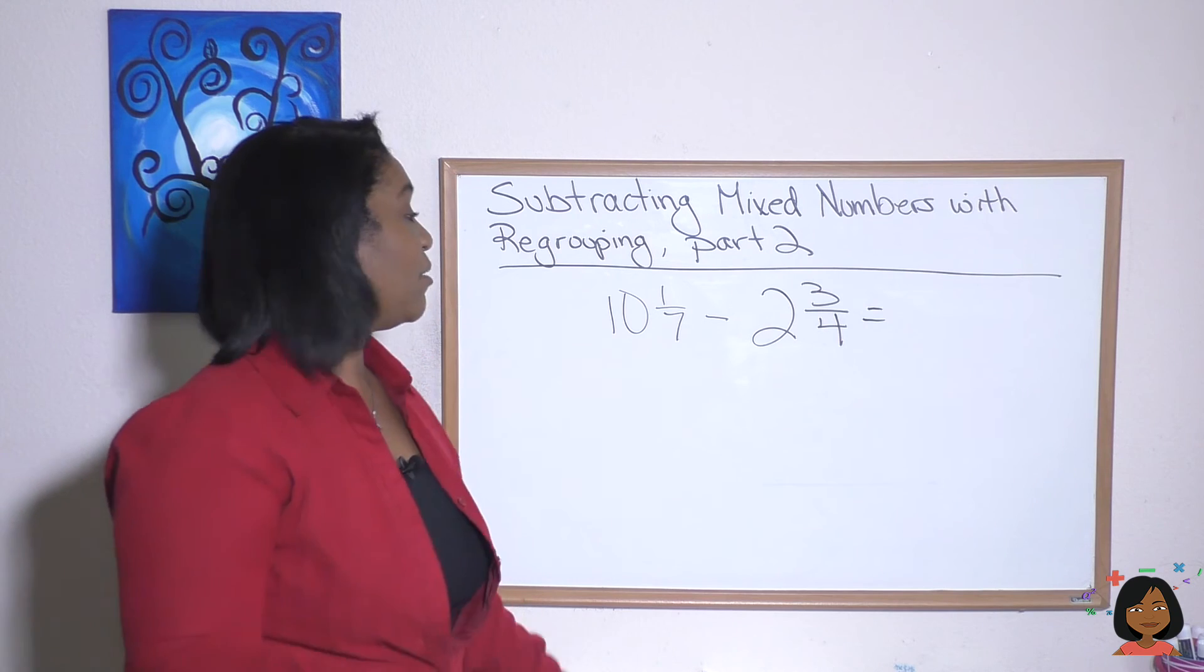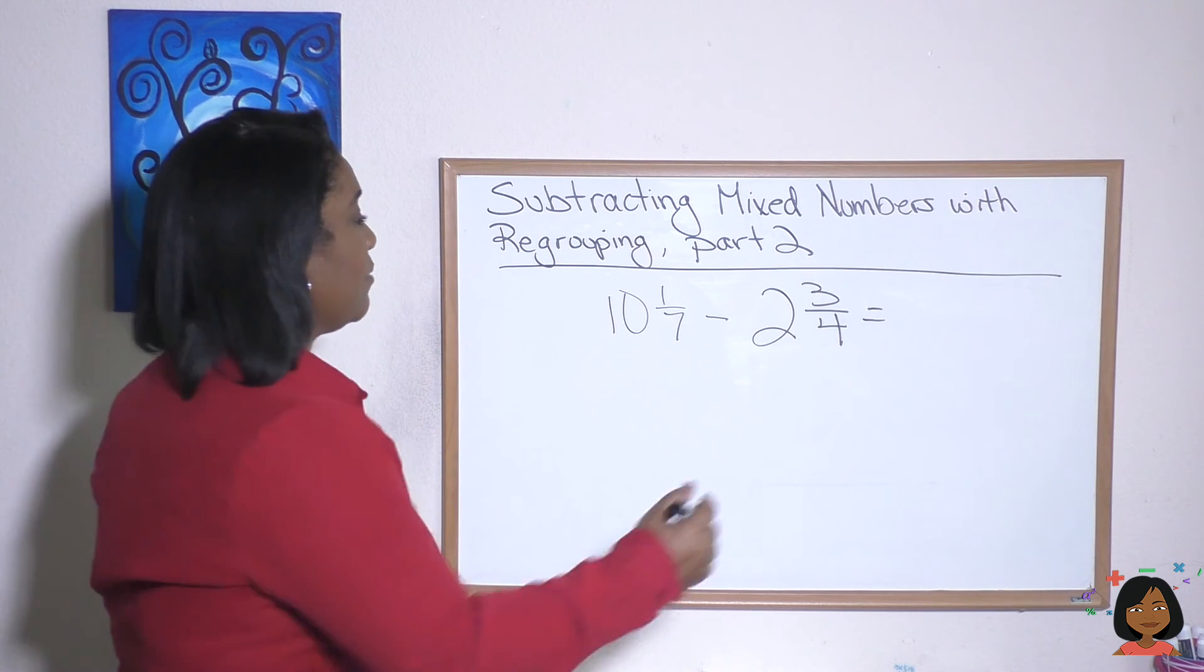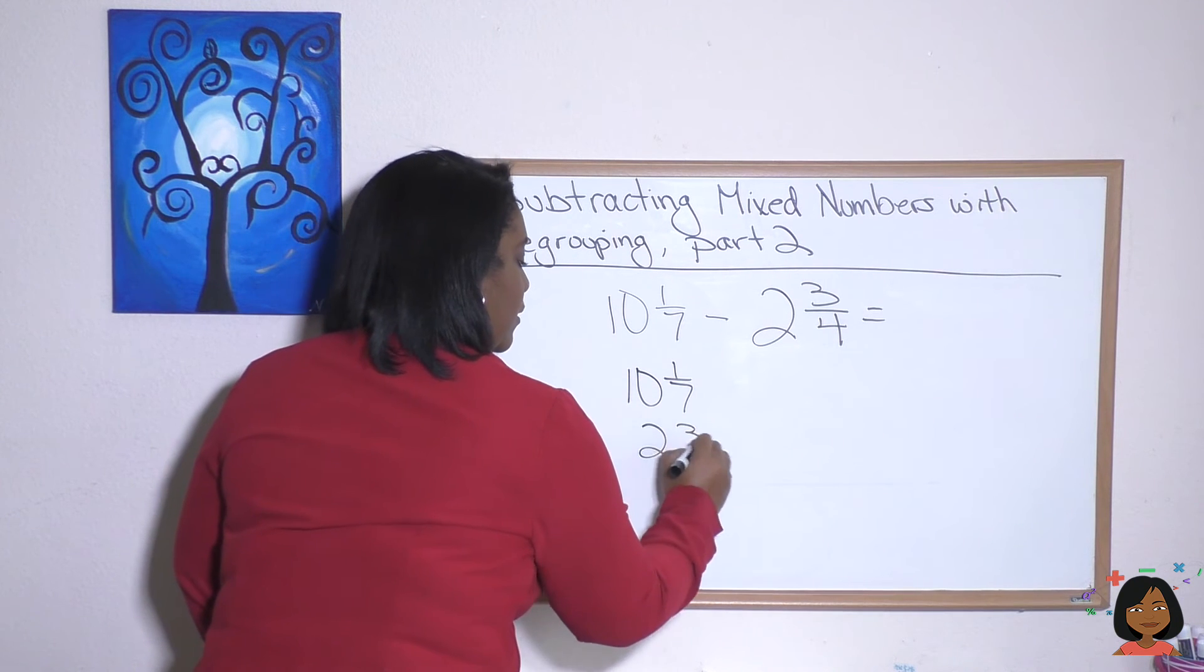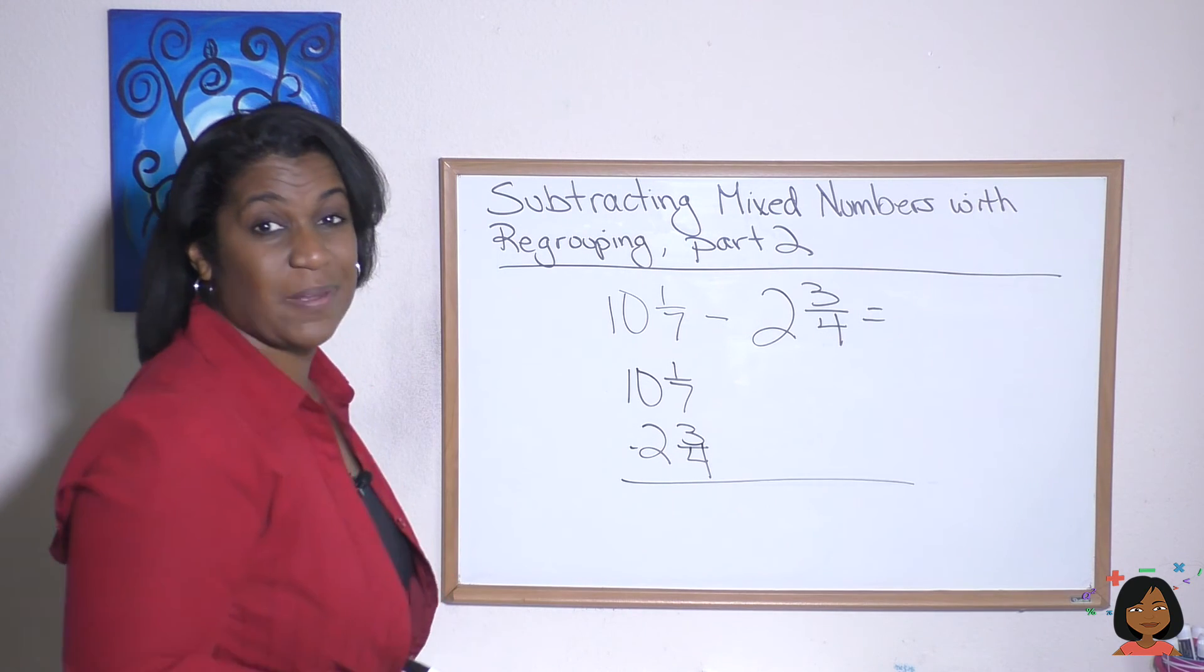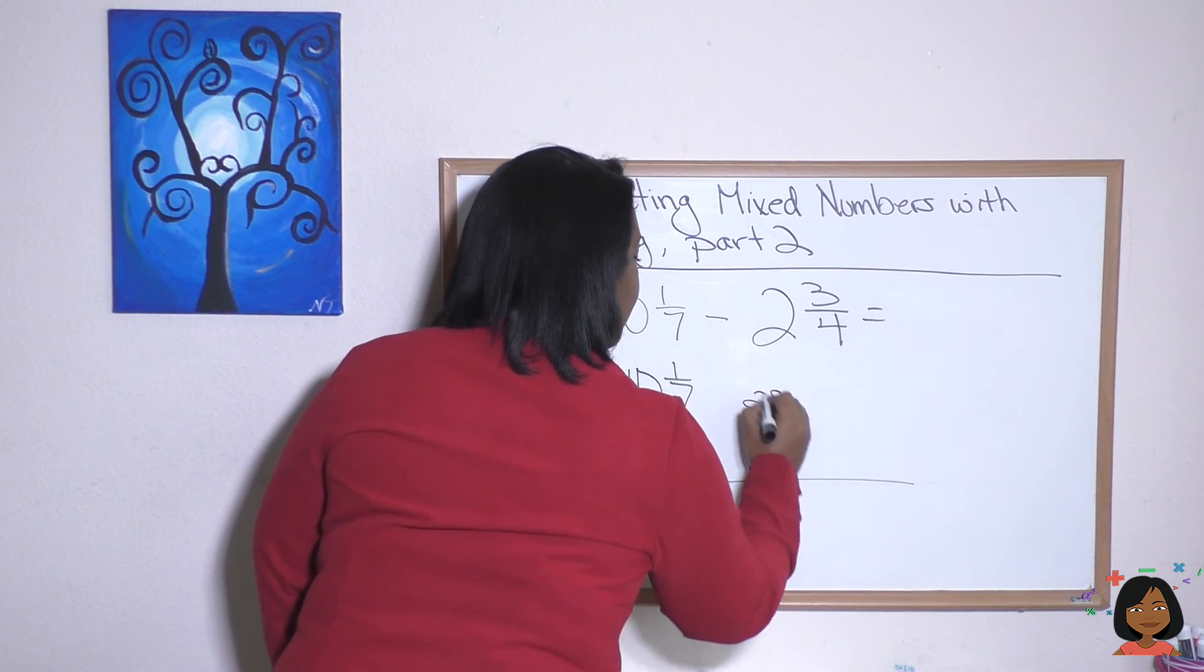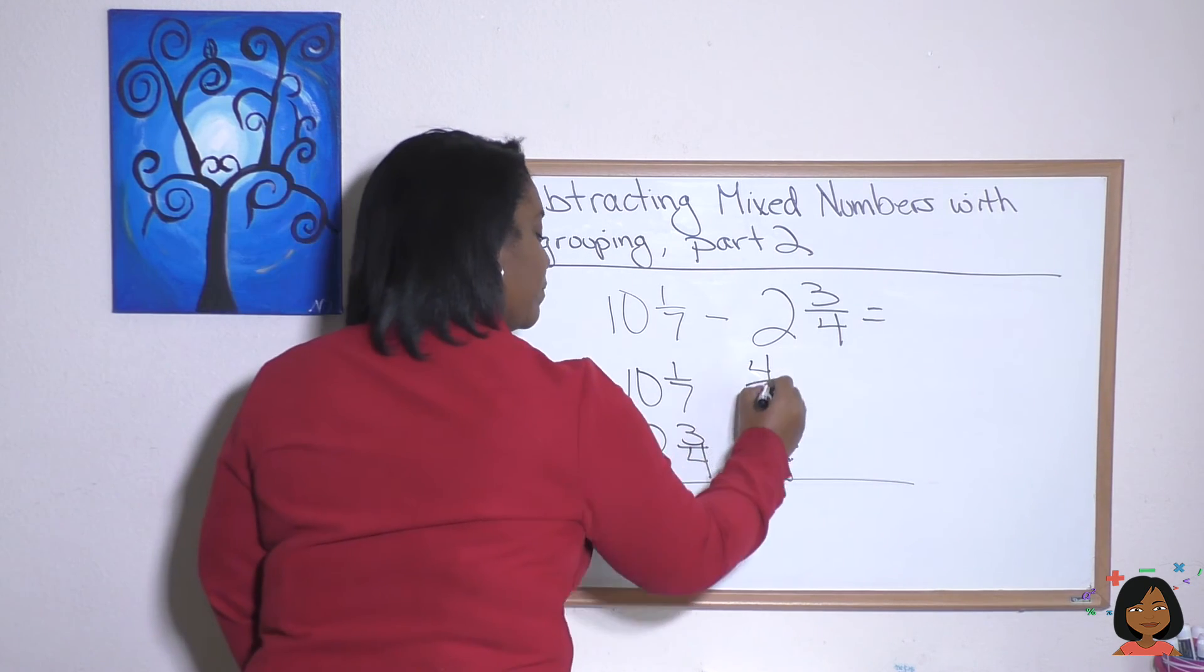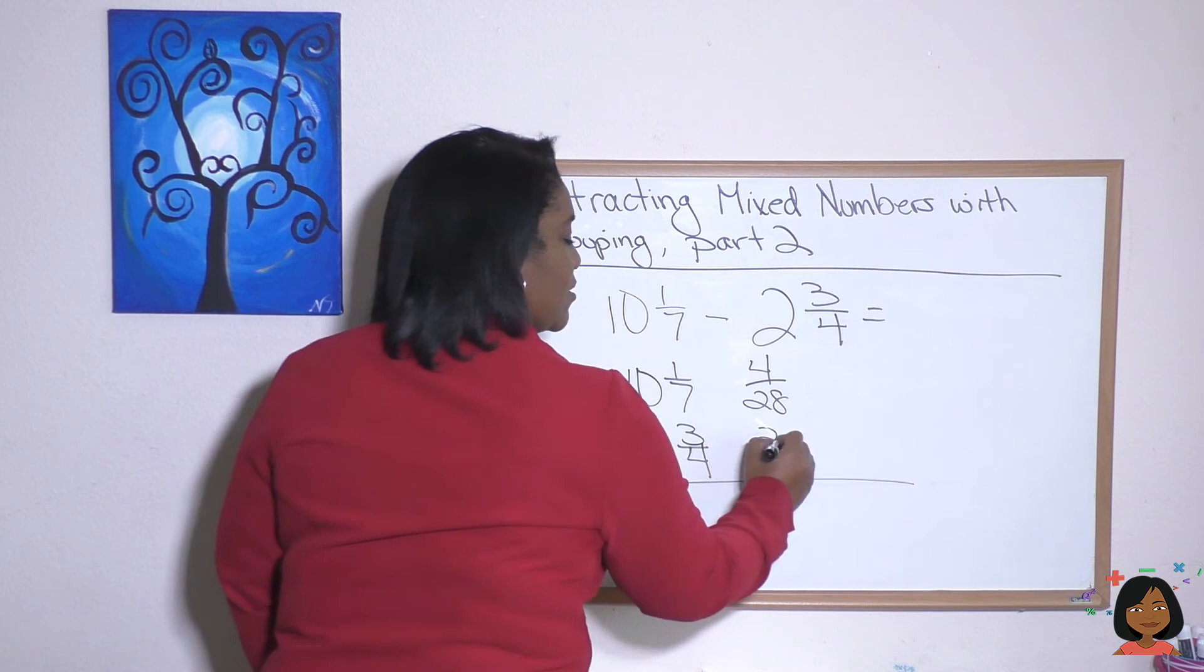Here's your final example. 10 and one sevenths minus two and three fourths. Let's do it. I'm going to rewrite it vertically because it makes my life easier. And we do not have a common denominator. So let's find one. Seven and four, we're going to use 28 for both of them. Seven times four is 28. One times four is four. Four times seven is 28. Three times seven is 21.